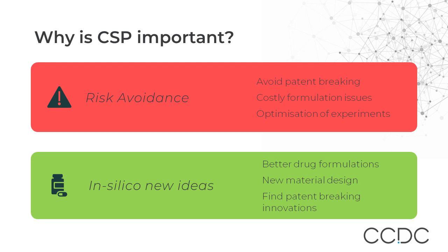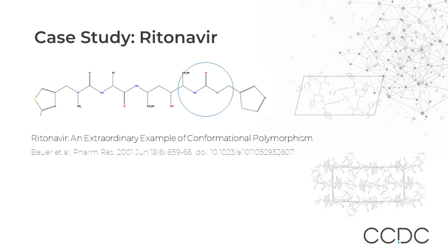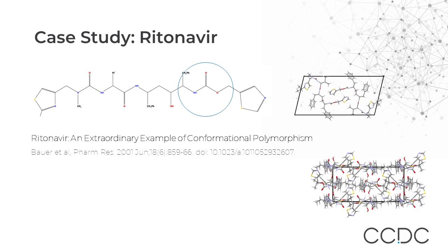On the other hand, CSP can be used to generate new ideas. The generation of unseen structures may suggest that a given form can be made that is more conducive to manufacture. It can facilitate new material design. And counter to risk assessment, it can actually be used for patent breaking. A famous example of the cost of risk is the structure of Ritonavir. In this case, a late-occurring polymorph that was thermodynamically more stable than the form being used for therapy appeared during scale-up for manufacture. It proved highly challenging to create the old form once this had happened. The cost was estimated at a quarter of a billion dollars in lost revenues — and it's not an isolated case. Several examples have occurred since.